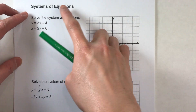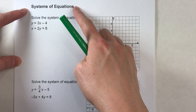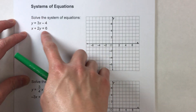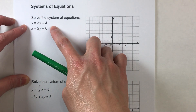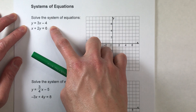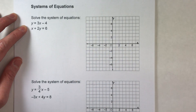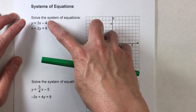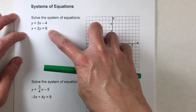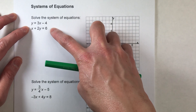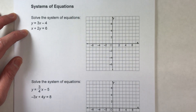Today we are solving systems of equations. A system of equations is two or more equations that you're working with at the same time. When you're solving them, what you're really looking for is a combination of x and y that works for all the equations in your system — in this case, the two that we're working with.